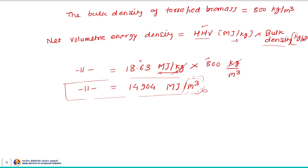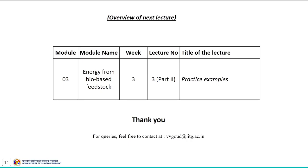Whether it is a bio-based feedstock, torrefied biomass, or torrefied pellet, the same approach applies: estimate the higher heating value from composition data, and if the bulk density is known, the volumetric energy density can be calculated easily. With this we end the lecture, and in the next lecture we will practice a few more examples on the remaining concepts discussed in this module. Thank you.